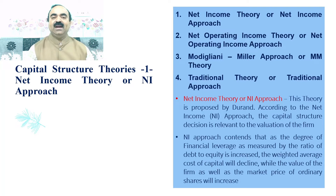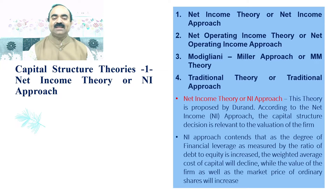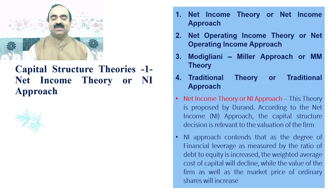Net income theory, or NI approach, is proposed by Durand. According to the net income approach, the capital structure decision is relevant to the valuation of the firm. NI approach contends that as the degree of financial leverage — as measured by the ratio of debt to equity — is increased, the weighted average cost of capital will decline, while the value of the firm as well as the market price of ordinary shares will increase.